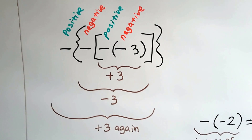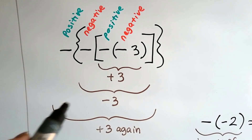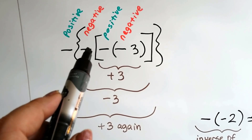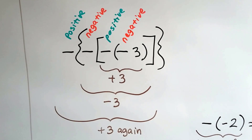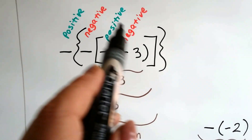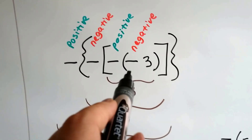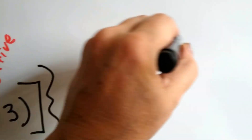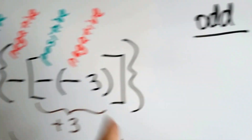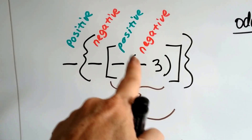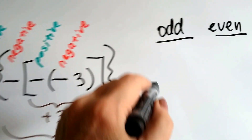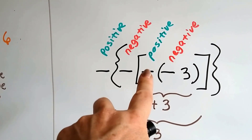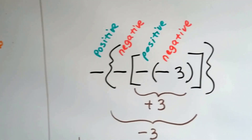What if there's a bunch of grouping symbols and we see 4 of them? We go from negative 3 — two of them makes positive 3, three makes negative 3, four makes positive 3. When we have an odd number of negative signs — 1 or 3 — it's negative. When we have an even number of negative signs — 2 or 4 — they're positive.